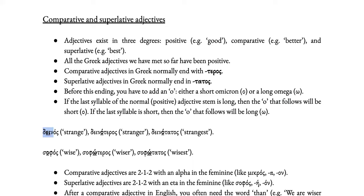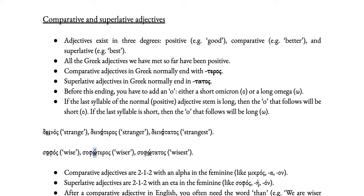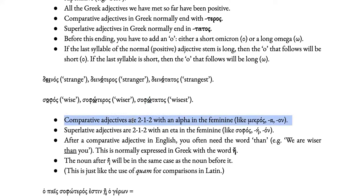Here's an example: deinos. The stem is dein-, and the last vowel is the diphthong ei, which is long; therefore the o before -teros and -tatos is short: deinoteros and deinotatos — that's how you say stranger and strangest. On the other hand, sophos: the stem is soph-, and the last vowel is o, which is short, so the o before -teros and -tatos must be long: sophoteros and sophotatos.